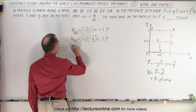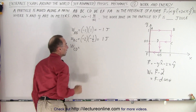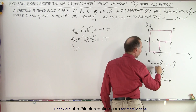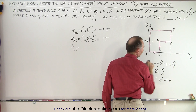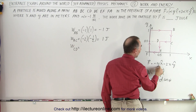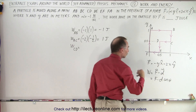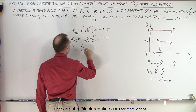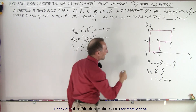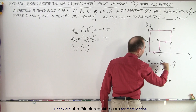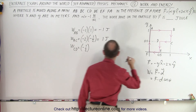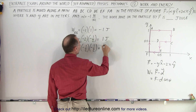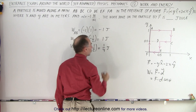Now the work done from C to D. We travel in the X direction, so only the X component is valid. The Y value is ½, so the force is −½. We travel in the negative direction with a displacement of −½. Multiplying: (−½)×(−½) = positive ¼ joule of work done from C to D.